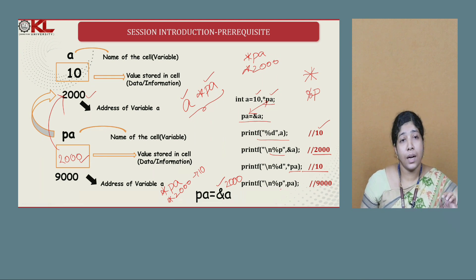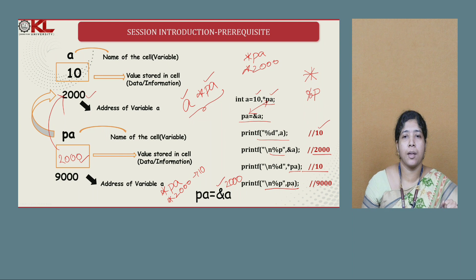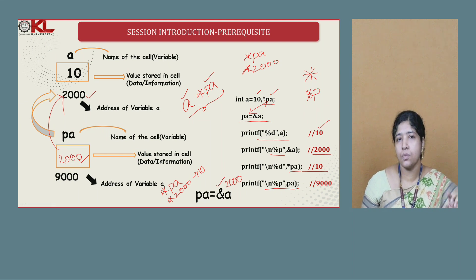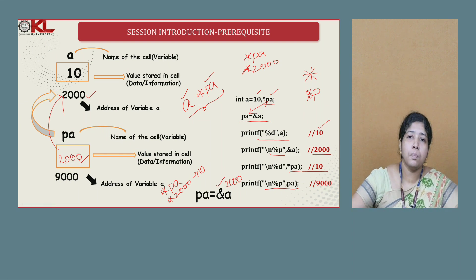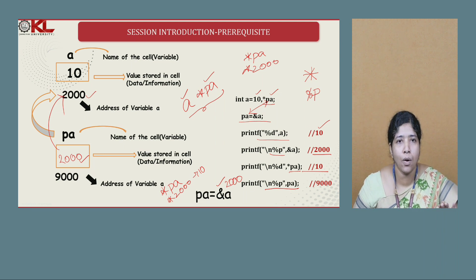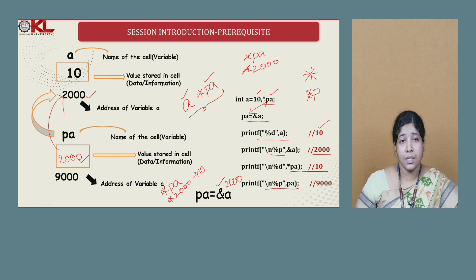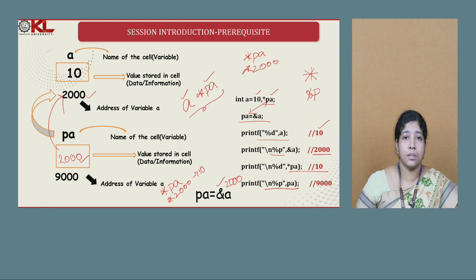Next, to show the address of PA, I print PA using %p, and 9000 is printed. I hope everybody is now familiar with the pointer concept, because you need to understand this to understand structure pointers. We will go ahead with structure pointers.